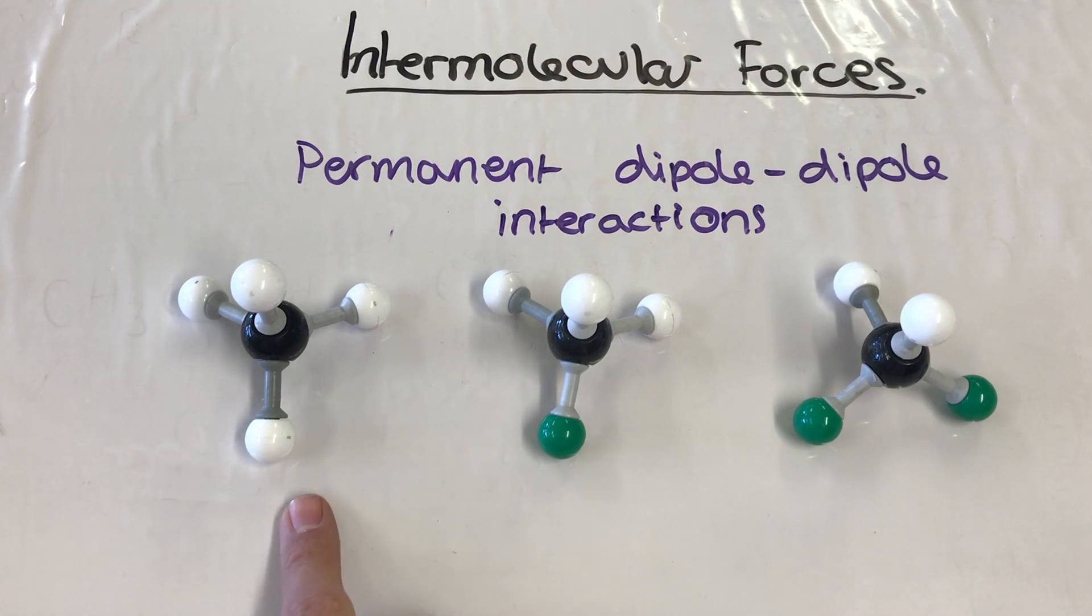Now I have three examples of molecules here for you. So I've got methane, I've got chloromethane, and I've got dichloromethane as well. Now what we're going to look at is the different polarities of each of these bonds, and then we're going to look at the type of intermolecular force that actually forms between them.